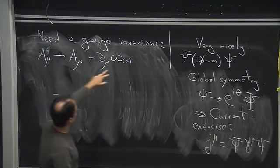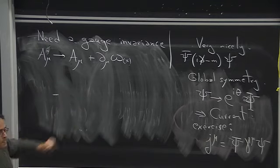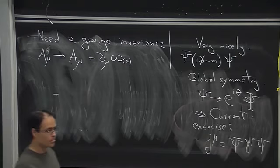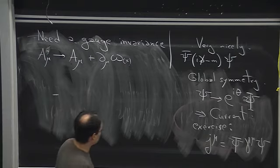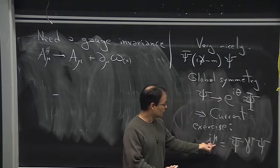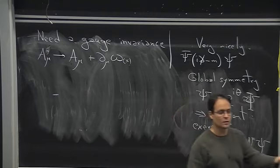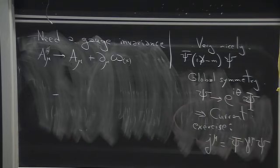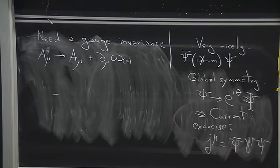A consistency condition is that the current must be conserved. In Maxwell's equations written as ∂_μ F^{μν} = J^ν, taking another derivative gives zero trivially, requiring a conserved current. Our Dirac theory has a global U(1) symmetry — sending ψ → e^{iθ}ψ — giving a conserved current J^μ = ψ-bar · γ^μ · ψ, which is exactly the object we are coupling to the gauge field.